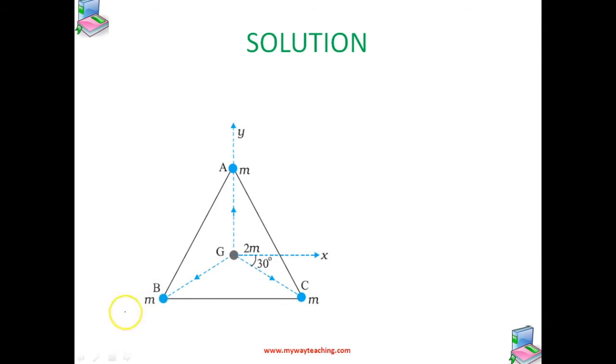Coming to the second part, if mass at A is doubled, then the X component of the force cancels out and the Y component survives. In that case, we can write FR is equal to 4GM square J cap minus 2GM square J cap is equal to 2GM square J cap.